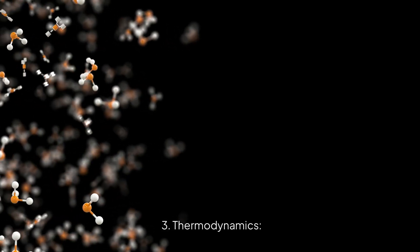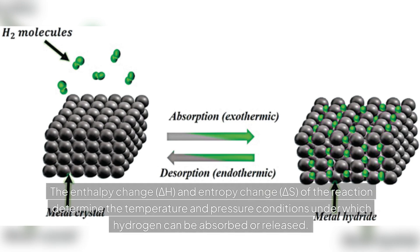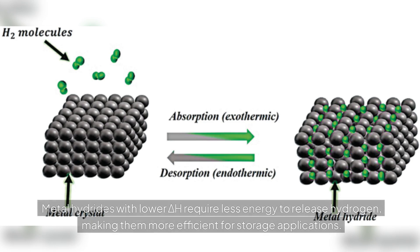Thermodynamics: the absorption and desorption of hydrogen in metal hydrides are governed by thermodynamic principles. The enthalpy change, delta H, and entropy change, delta S, of the reaction determine the temperature and pressure conditions under which hydrogen can be absorbed or released. Metal hydrides with lower delta H require less energy to release hydrogen, making them more efficient for storage applications.